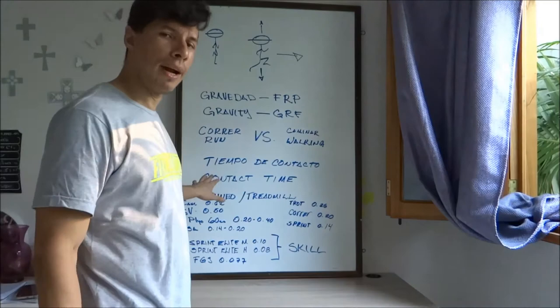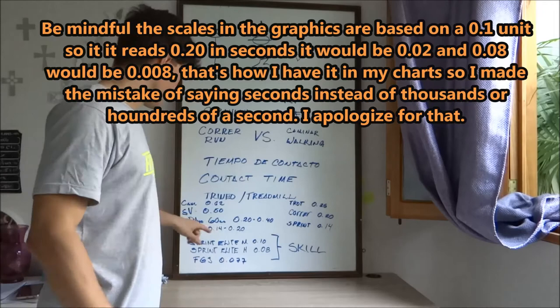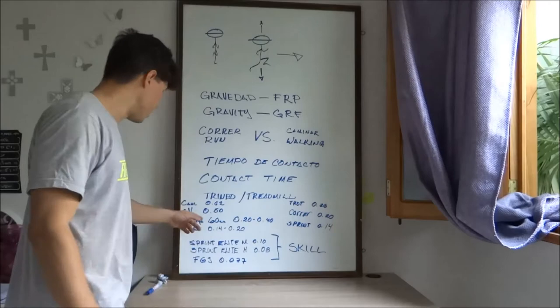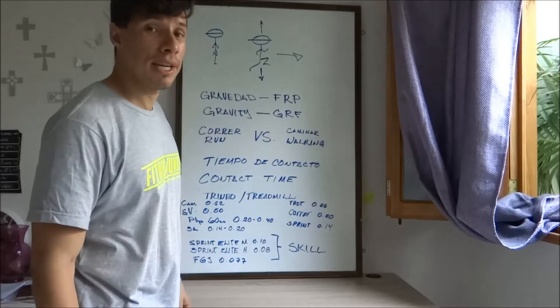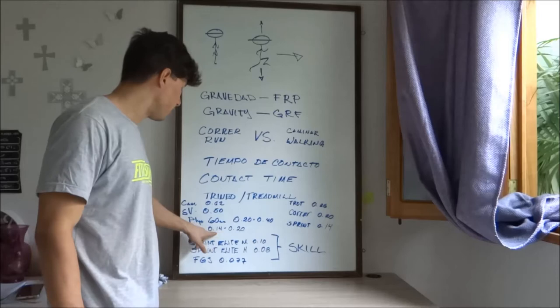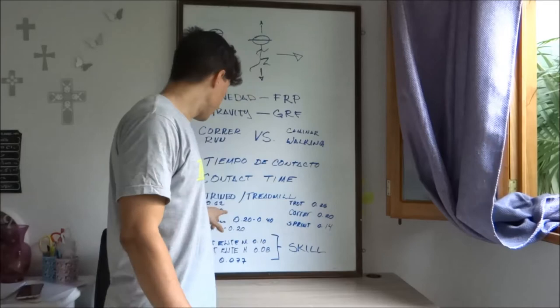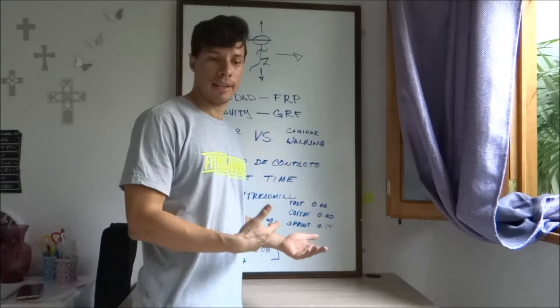And that's why there's a lot of training methods that shouldn't be used and others that are not being optimal for you guys. If you train producing slow strength all the time, you won't have the ability to produce quick forces. And if you are always training on doing movements or producing ground reaction forces with two feet, you will never be able to produce the quickest ones that are with one foot.